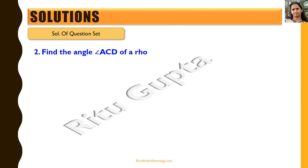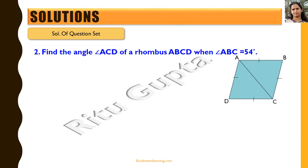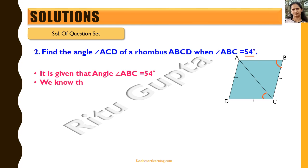Let's look at the second question: find angle ACD of a rhombus ABCD whose angle ABC is given to be 54 degrees. We need to find angle ACD. Now, triangle ABC is an isosceles triangle because for a rhombus, AB is equal to BC.